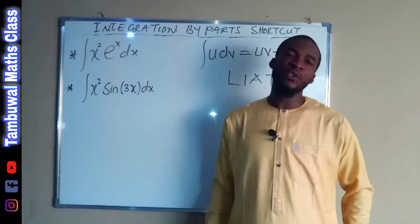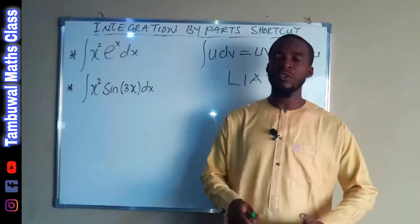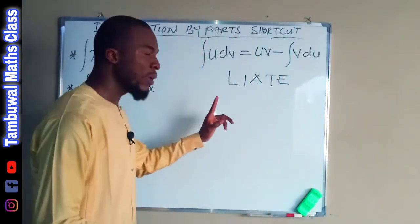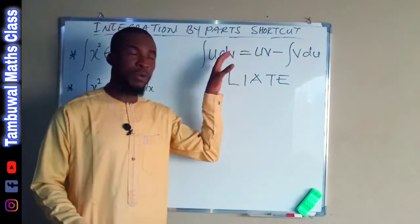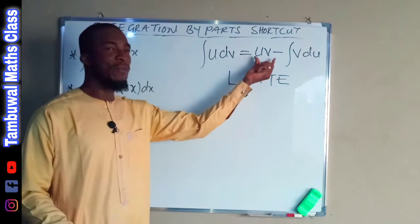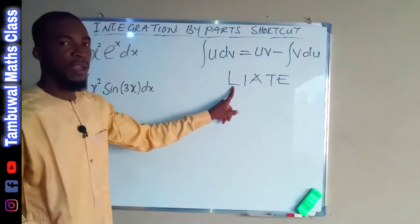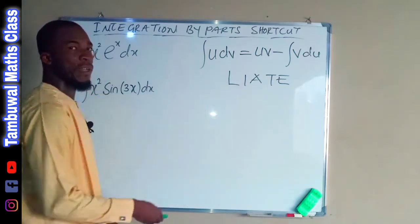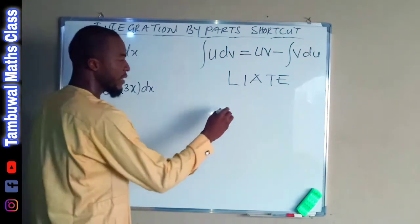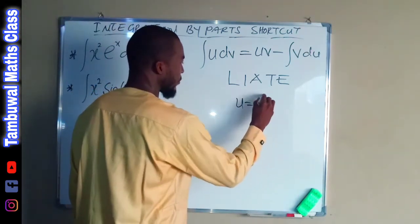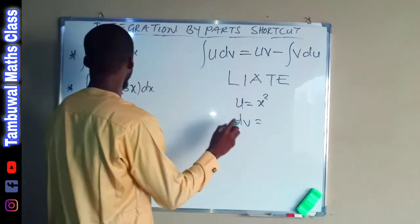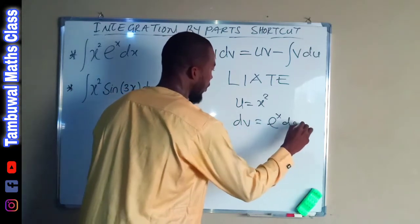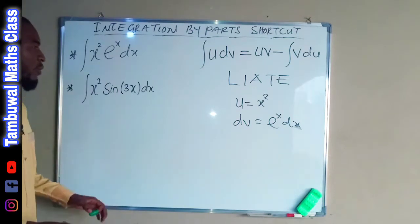Hello, good day viewers. In today's tutorial I'm going to show you a shortcut to perform integration by parts. I have two problems with me here. We have uv which we want to decide — we have a log function, we don't have an inverse trig function, but we have an algebraic function x squared. So we let u equal to x squared and dv equal to exponential x dx. We are going to form a table.